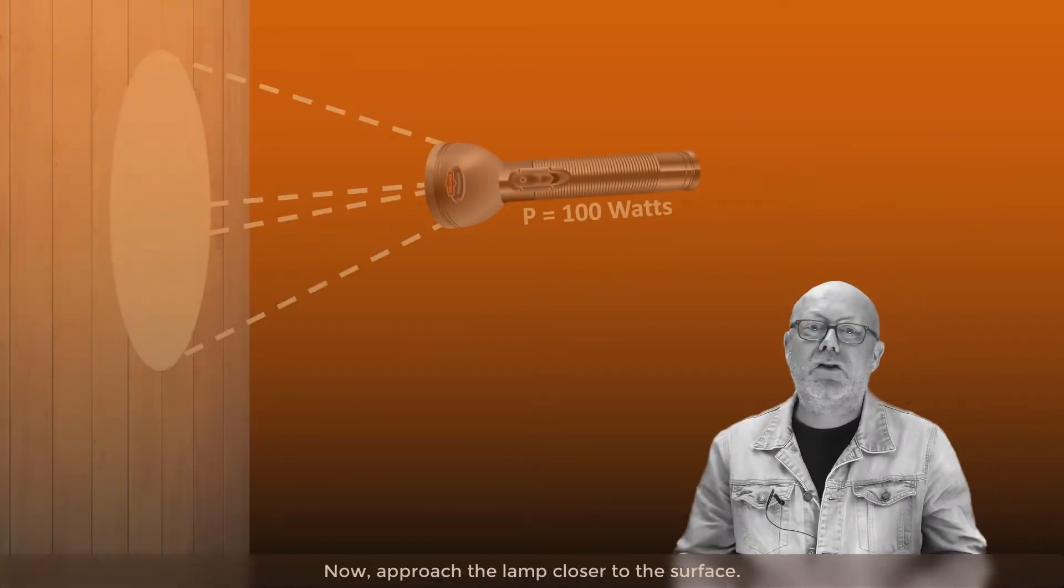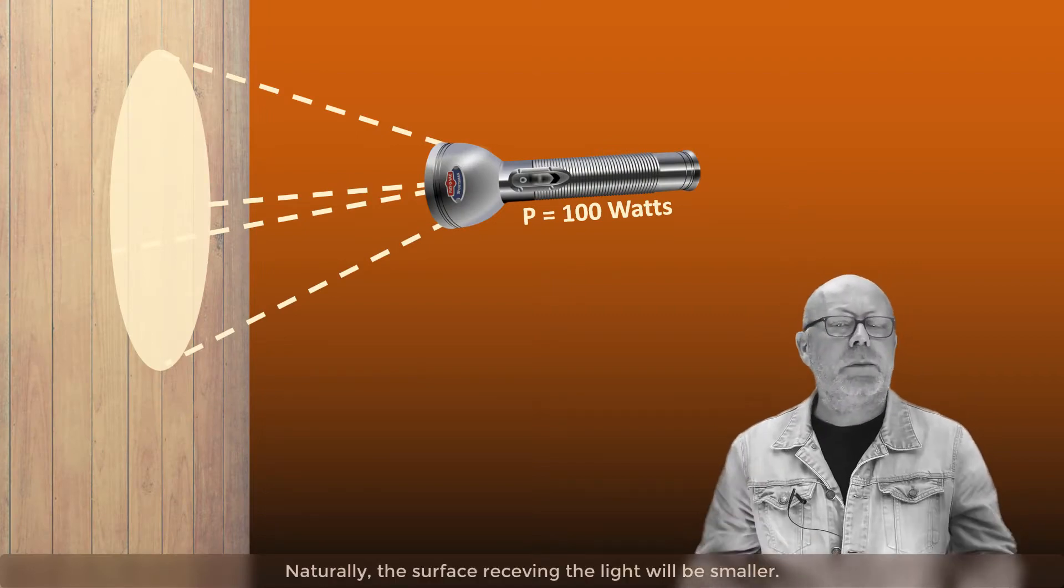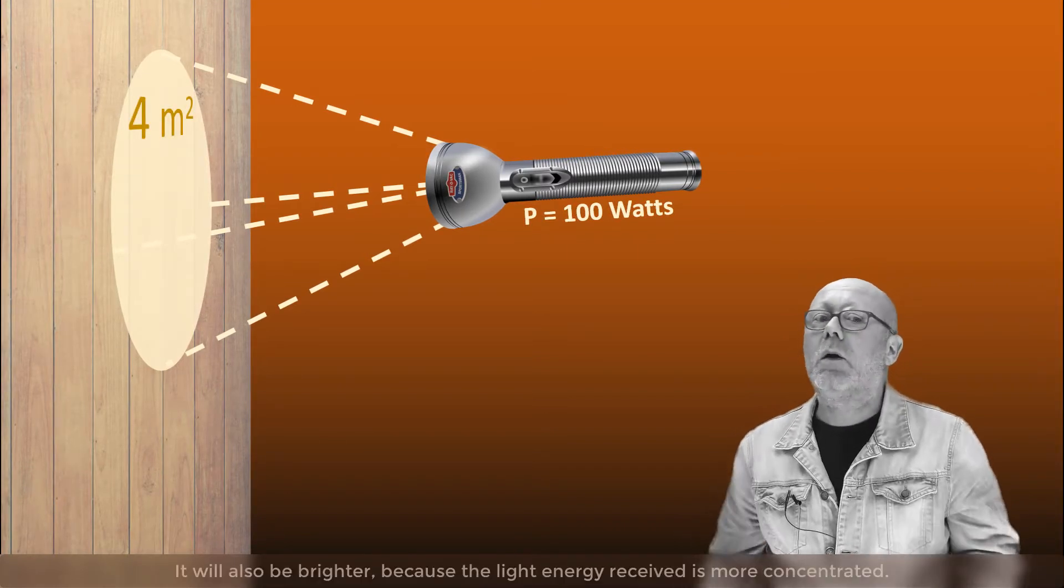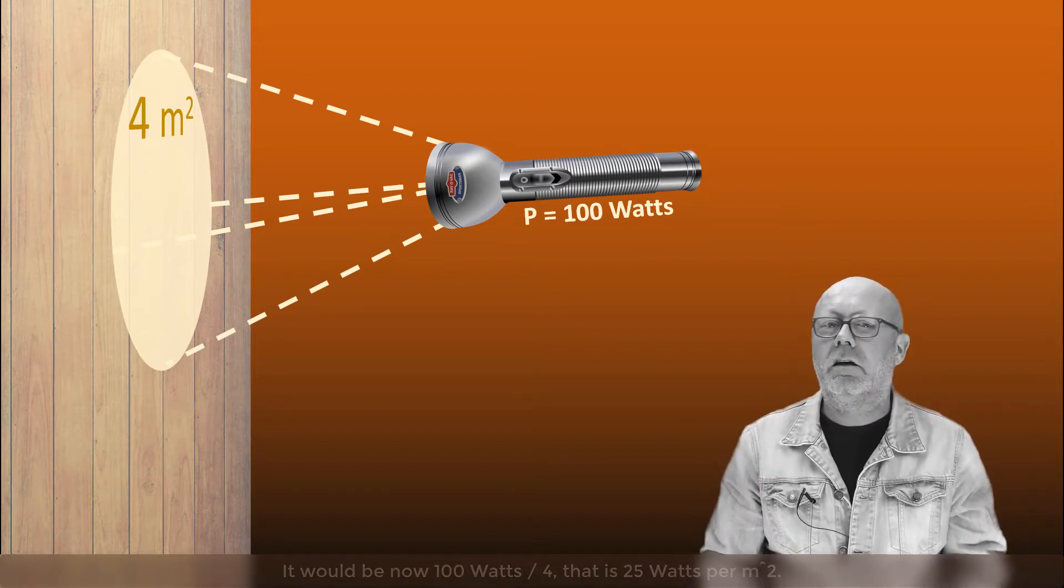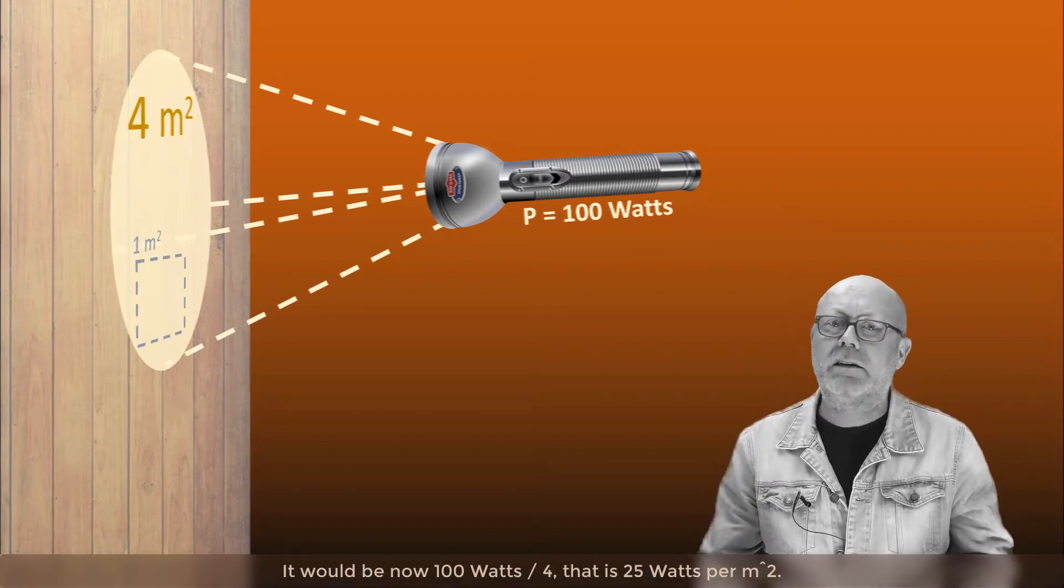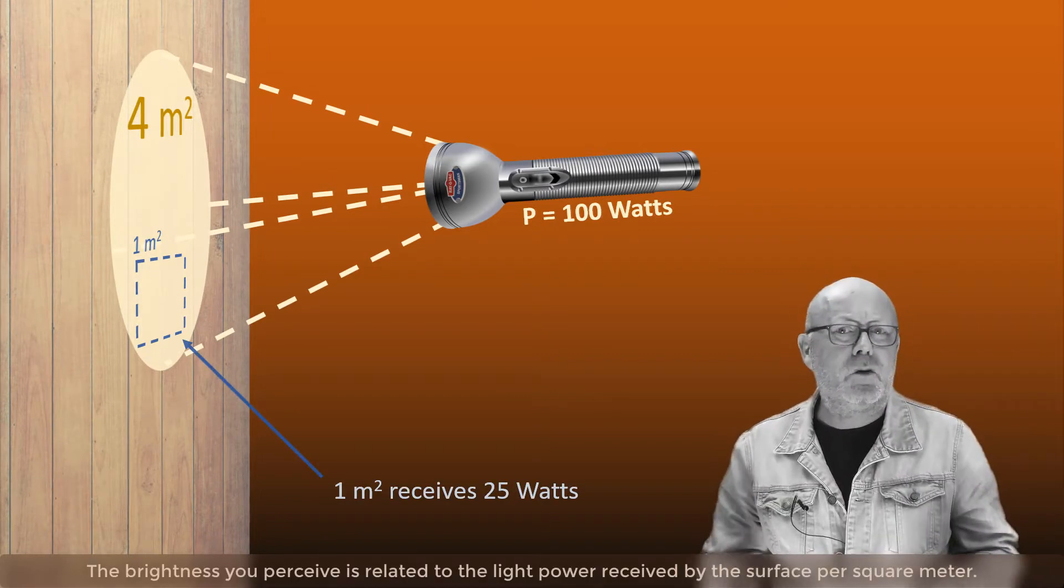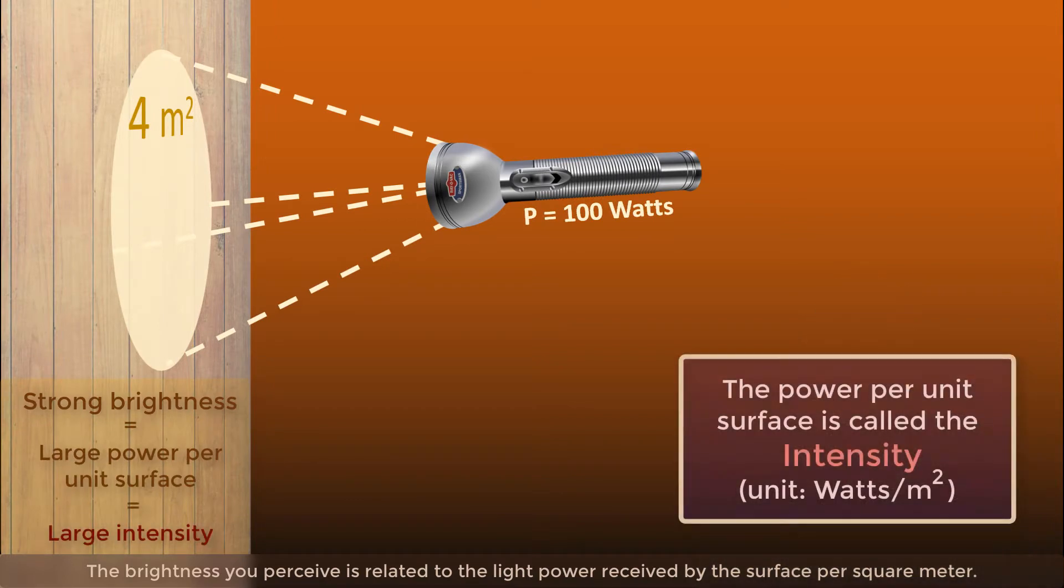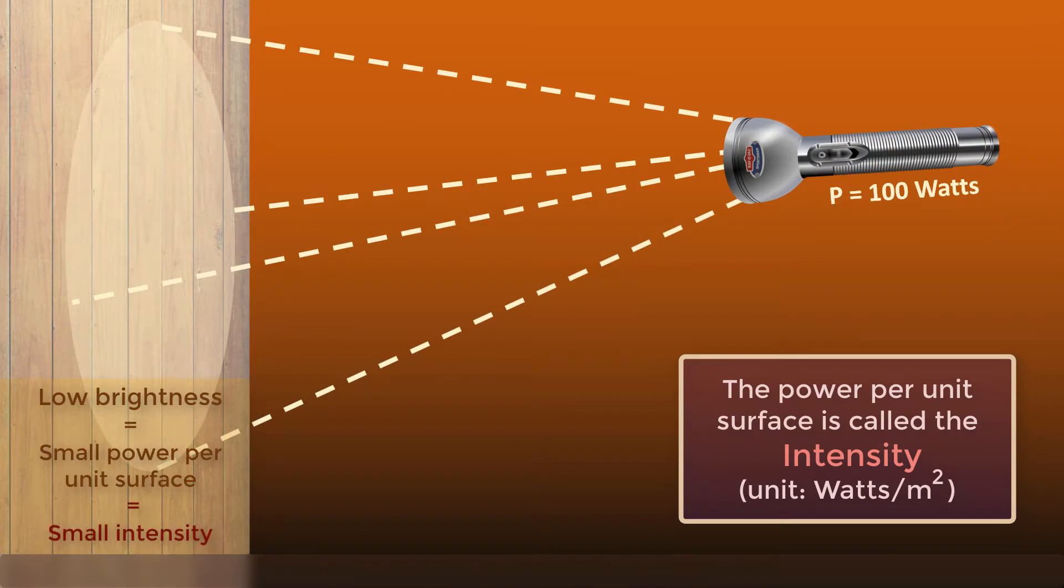Now approach the lamp closer to the surface. Naturally, the surface receiving the light will be smaller, for example 4 meter square. But it will also be brighter because the light energy received is more concentrated. It would be now 100 watts divided by 4, that is 25 watts per meter square. The brightness you perceive is related to the light power received per square meter. It is a kind of density of energy applied on the surface, and this is what physicists call intensity.